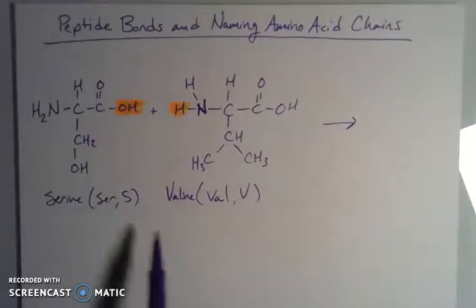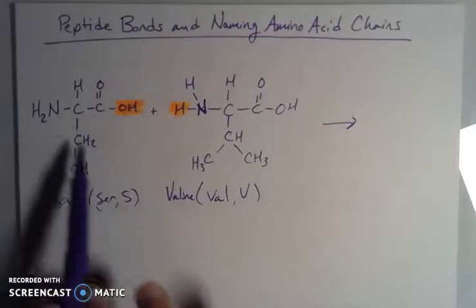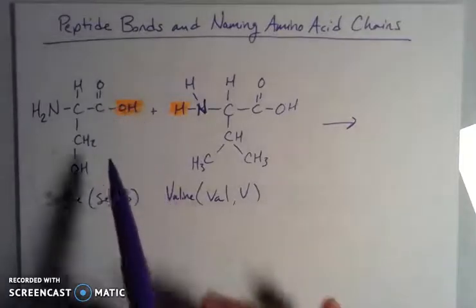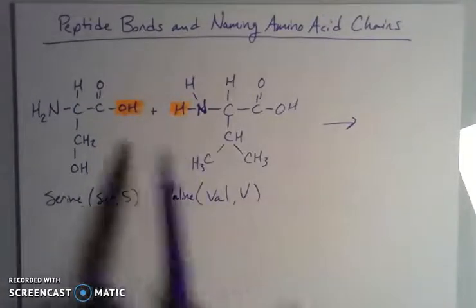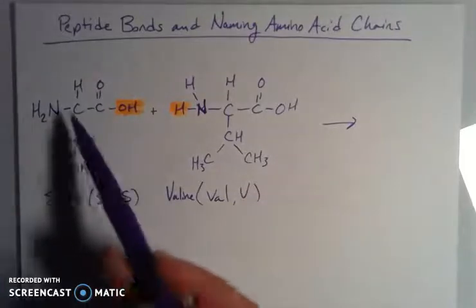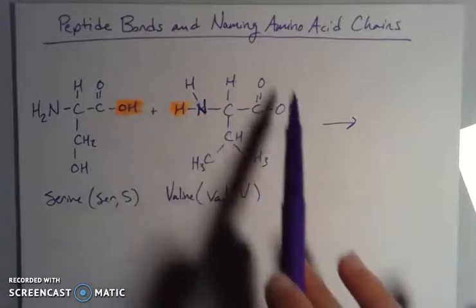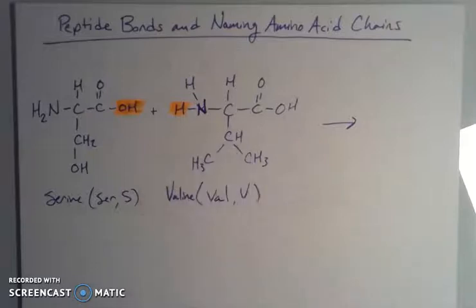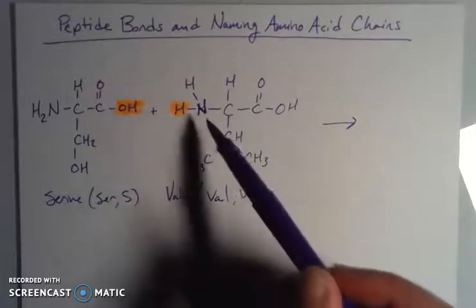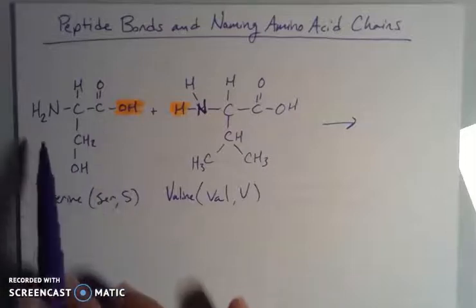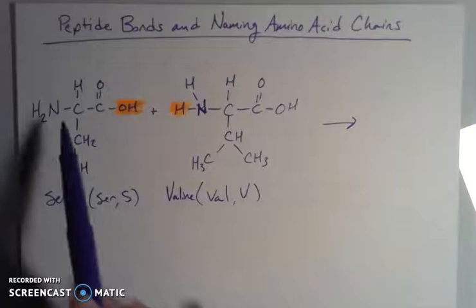Let's take serine and valine. We have our R groups on the side, as we're getting used to looking at amino acids. I have the carboxylic acid end, the amine group, and the alpha carbon with all of its chirality. We have the same features on valine: an amine group, the alpha carbon, the carboxylic acid group, and the R group for valine. I've broken out the amine group on one to distinctly show the hydrogens bonded to it, as opposed to the condensed formula H2N on the other.